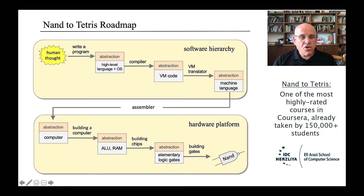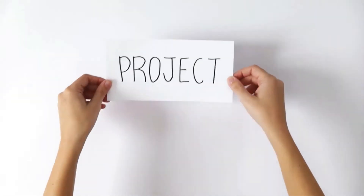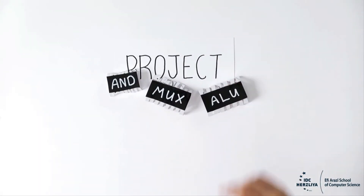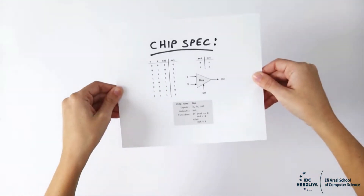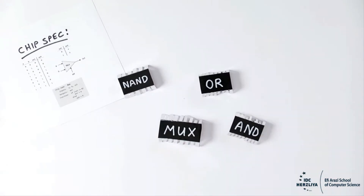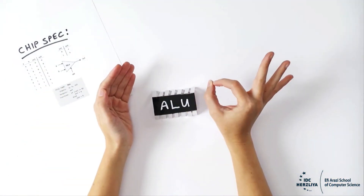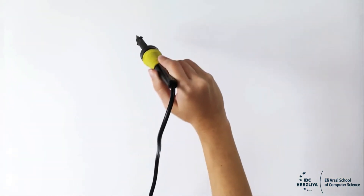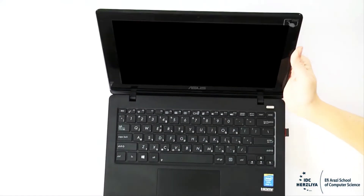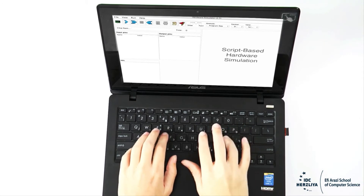What I'd like to do next is show you a one-minute video clip that focuses on the first six projects of the course. In each project you have to build a set of chips, and for each such chip we provide a complete chip specification. You then have to figure out how to build this functionality using chips that you've built before. And you will have to do no soldering whatsoever — instead, you will build all the chips using a hardware simulator, just like hardware engineers actually do in practice.